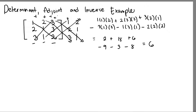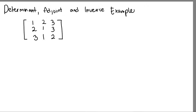The problem with the rule of Sarrus or the diagonal method is that it can only be applied for matrices that are 3×3 or smaller. So for bigger matrices, we use the more general approach called the method of cofactors.